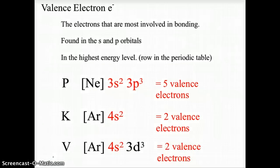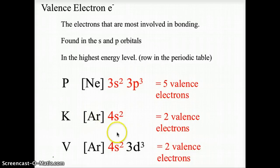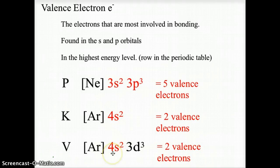And for vanadium, again we use argon, 4s2, 3d3. But again, we're only looking at the highest energy level, so therefore we're looking at the four, and only the s and p orbitals, so in this case s2, giving vanadium two valence electrons.